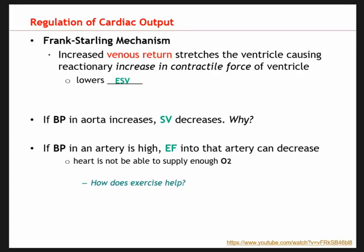Exercise helps by decreasing blood pressure at rest and increasing the volume of the ventricles, allowing the body to receive adequate blood flow. Exercise also results in greater elasticity of our arteries — more elastic arteries can stretch more, making it less likely to have higher blood pressures at rest and during exercise. Decreased blood pressure means an increased ability to deliver blood and oxygen to working muscle.